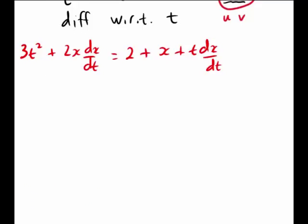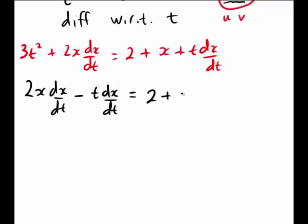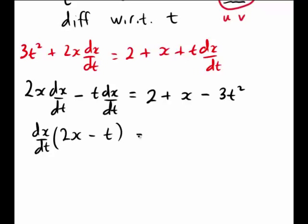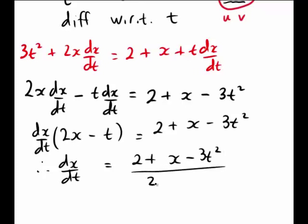We now have an expression which contains dx/dt in a couple of places, so we rearrange to make dx/dt the subject. On the left-hand side we had 2x·(dx/dt), and we subtract t·(dx/dt) from both sides, putting all other terms on the right to get 2 plus x minus 3t squared. Taking dx/dt out as a common factor on the left gives dx/dt times (2x minus t) equals 2 plus x minus 3t squared. Hence, dividing both sides by (2x minus t) gives us the required answer for dx/dt.